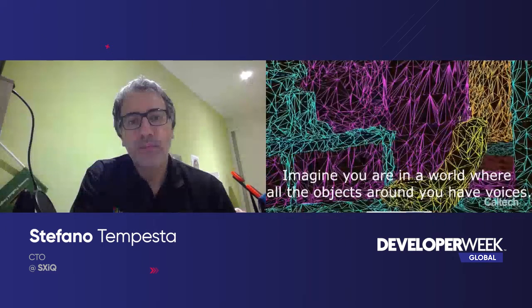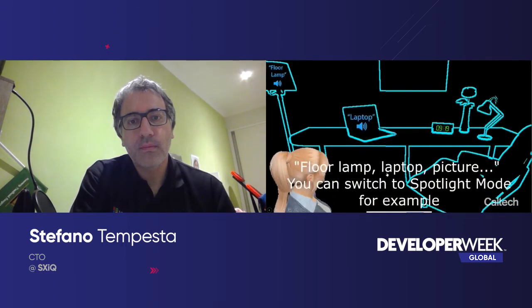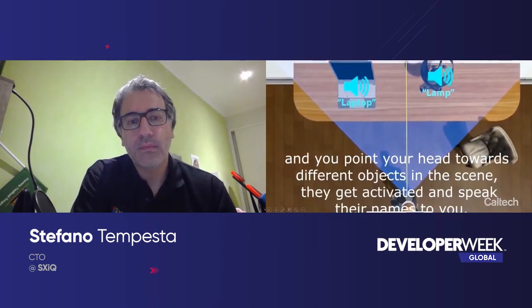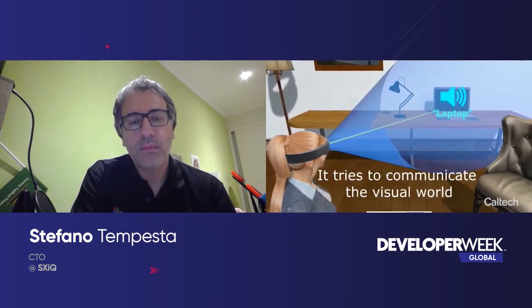The HoloLens creates a 3D mesh of the physical space to overlay virtual information on top of physical space. What we did is to try to take advantage of that, but overlay sound or auditory objects on top of physical scenes. Imagine you are in a world where all the objects around you have voices. When you first walk into a new space, you can simply have the objects call themselves out one at a time from left to right: floor, laptop, picture. Then you can switch to a spotlight mode and point your head towards different objects in the scene — they get activated and speak their names to you. It tries to communicate the visual world at the cognitive level, at the level of language, at the level of understanding.